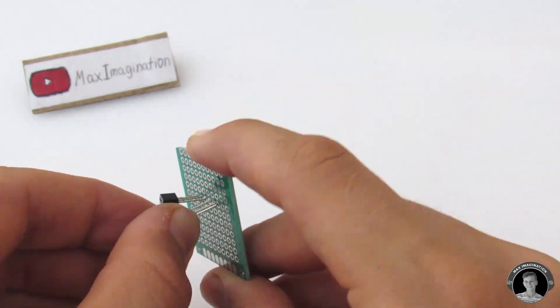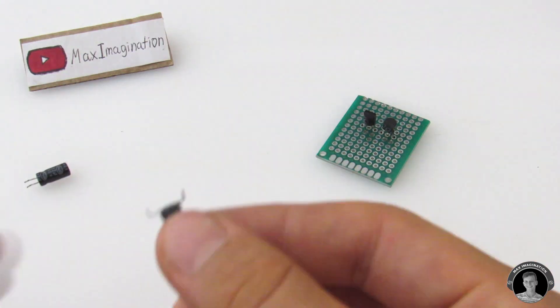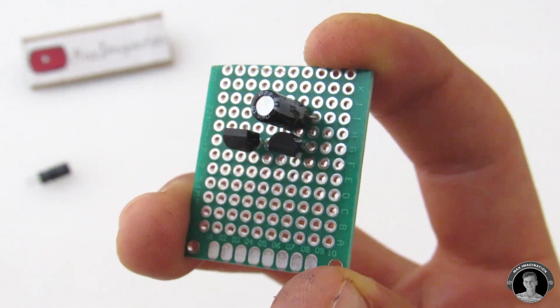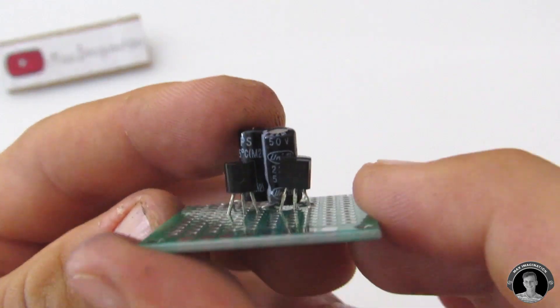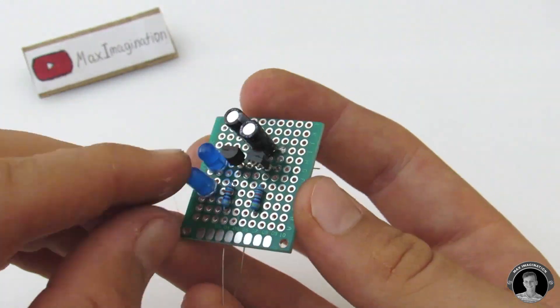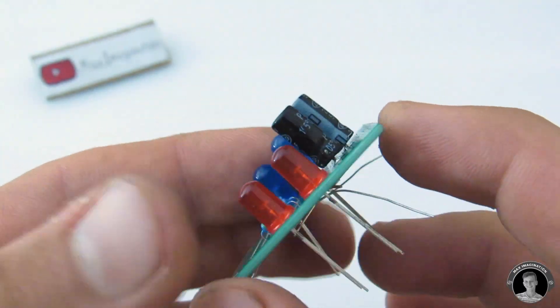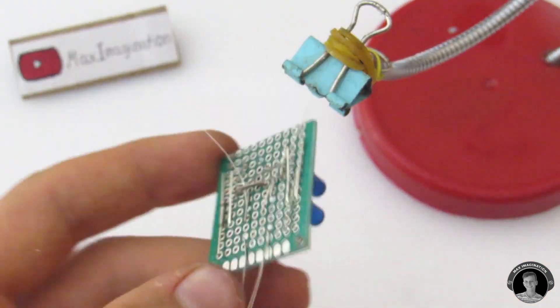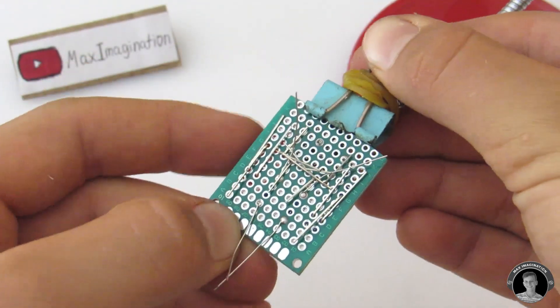Then put all the required components in. Once you put all the components into the PCB and bent all the pins accordingly, you're gonna want to solder all the components in place.